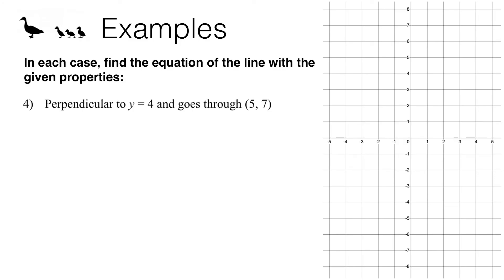Question 4 doesn't actually require the formula — you can do this with common sense. We're looking for a line perpendicular to y equals 4 that goes through the point (5, 7). The line y equals 4 is a horizontal line with a gradient of 0. Every single point on this line has a y-coordinate of 4 — for example (1,4), (2,4), (3,4), (3.5, 4) — it's not just whole number coordinates.